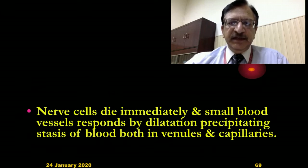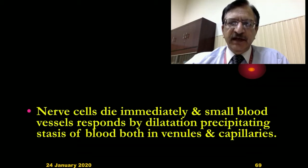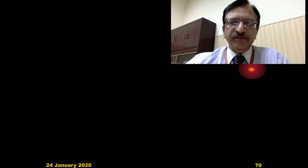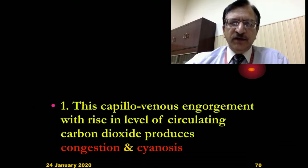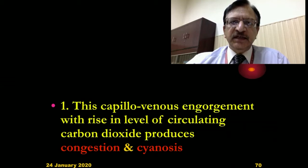The nerve cells die immediately. The small blood vessels respond by dilatation, trying to increase blood flow to overcome that hypoxia. This precipitates stasis of blood in the venules and the capillaries, further reducing the circulation. This capillo-venous engorgement — due to dilatation of the small blood vessels with rise in the level of circulating carbon dioxide — produces congestion and cyanosis.